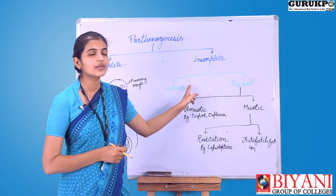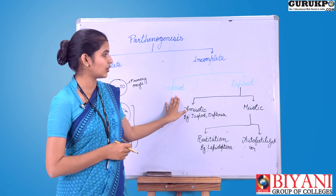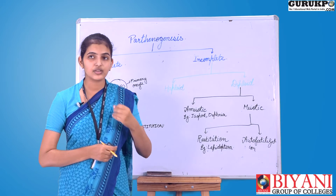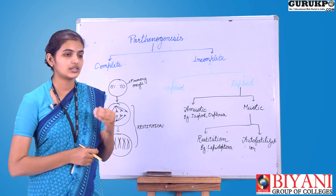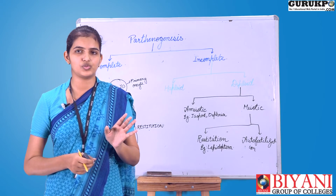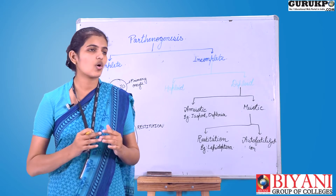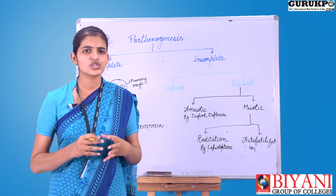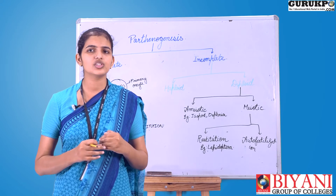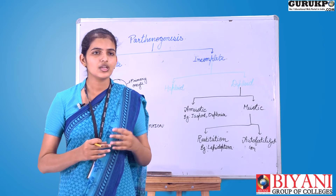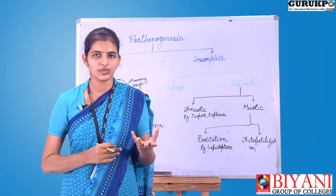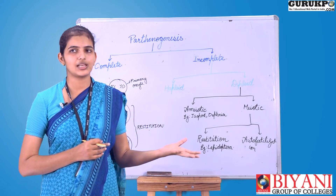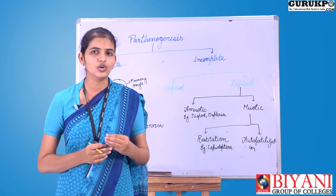Incomplete parthenogenesis in higher organisms is divided into two types: haploid and diploid. Haploid parthenogenesis occurs when an organism develops from an egg with a haploid number of chromosomes — half the number of the parent. This occurs in organisms with a social structural organization, such as bees, where animals are assigned roles based on their function when they grow up. In bees, we have a queen bee, female bees, and male bees. Male bees are haploid.